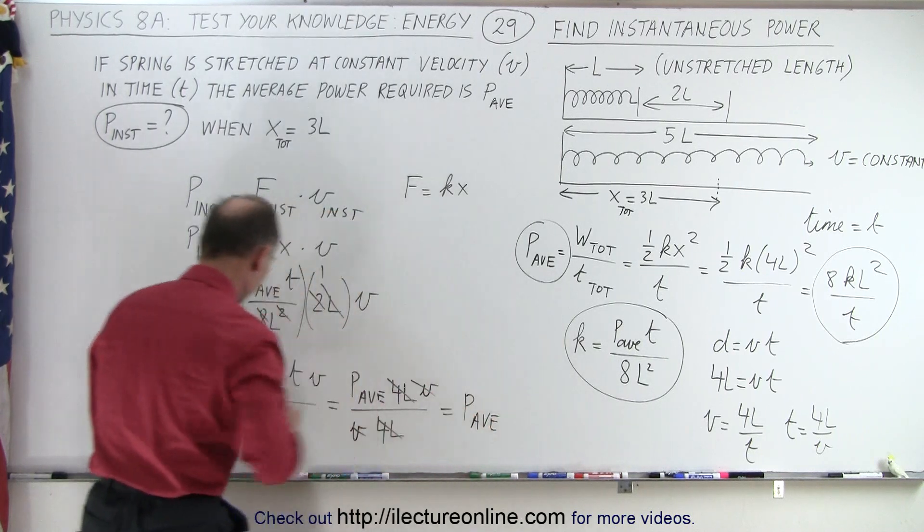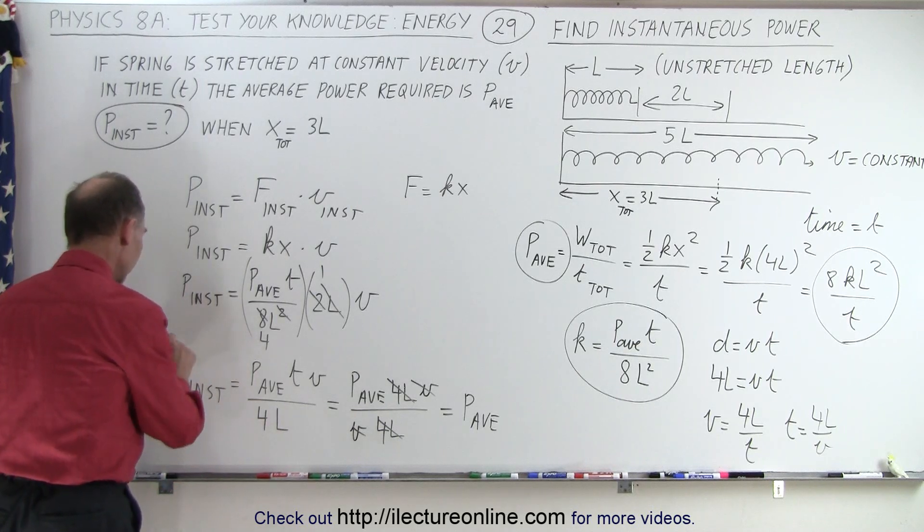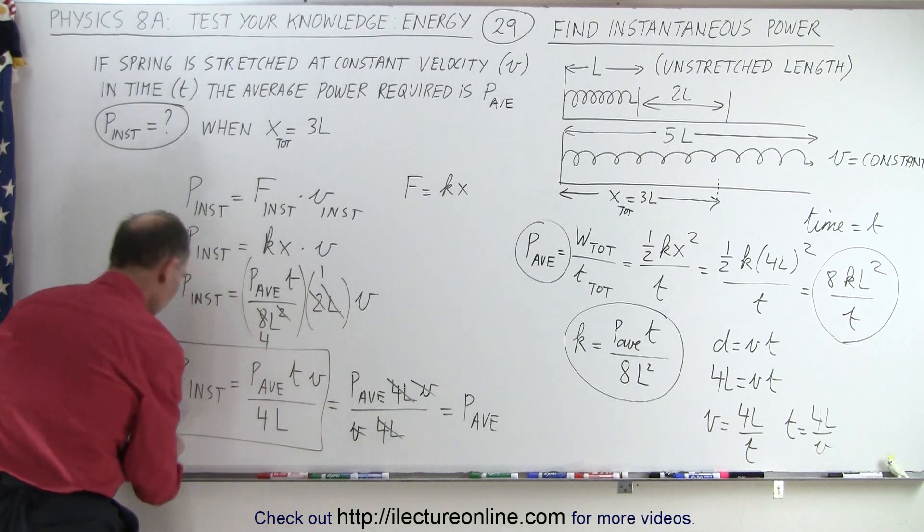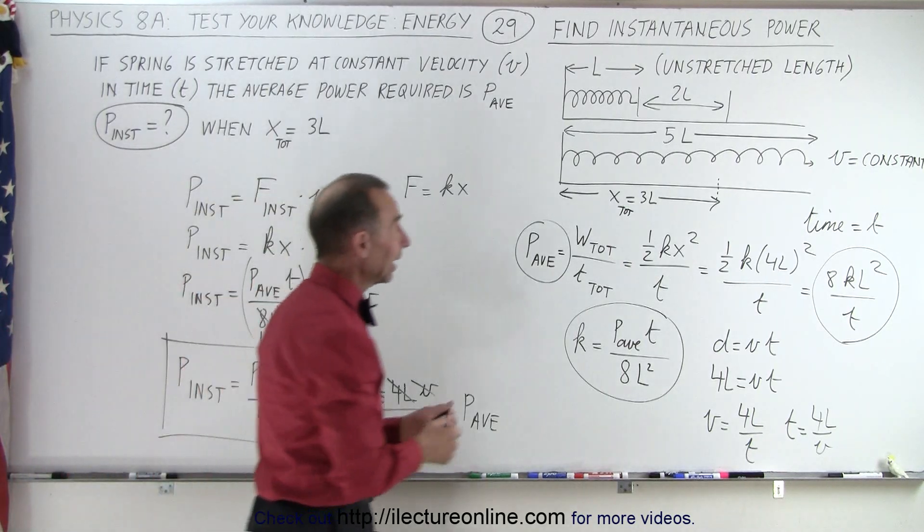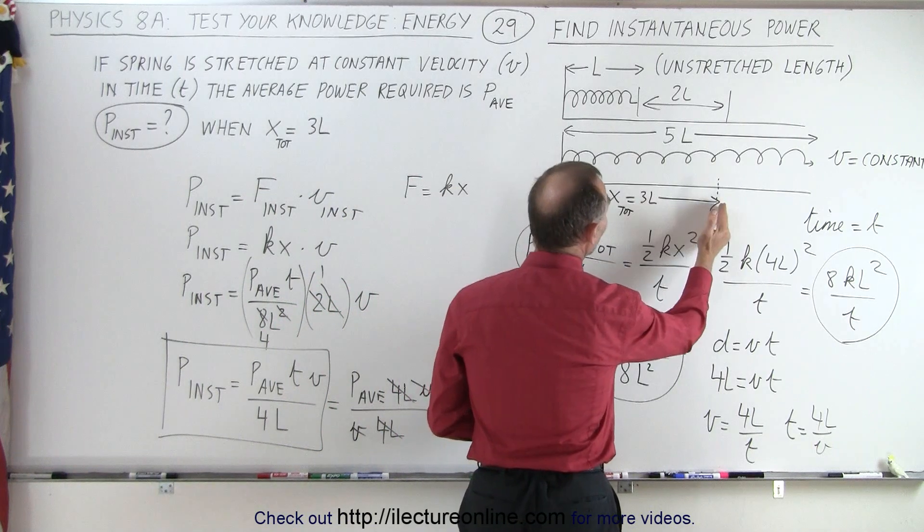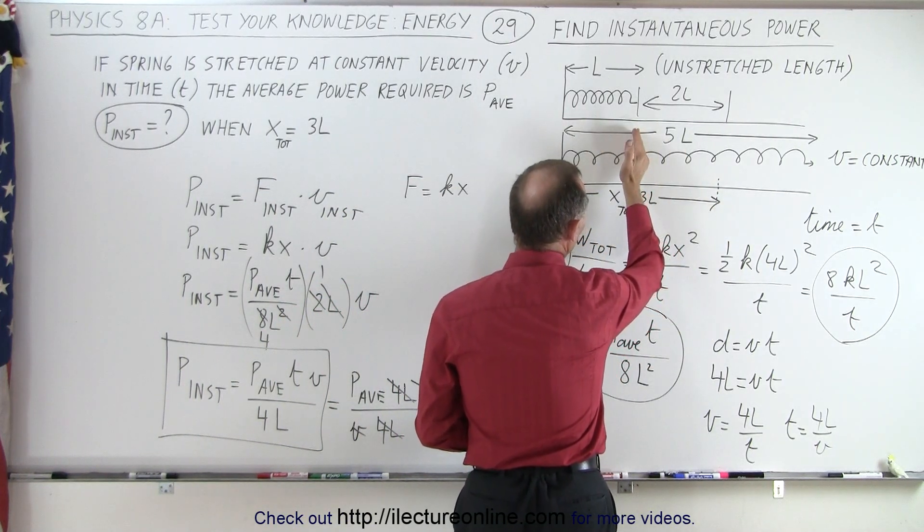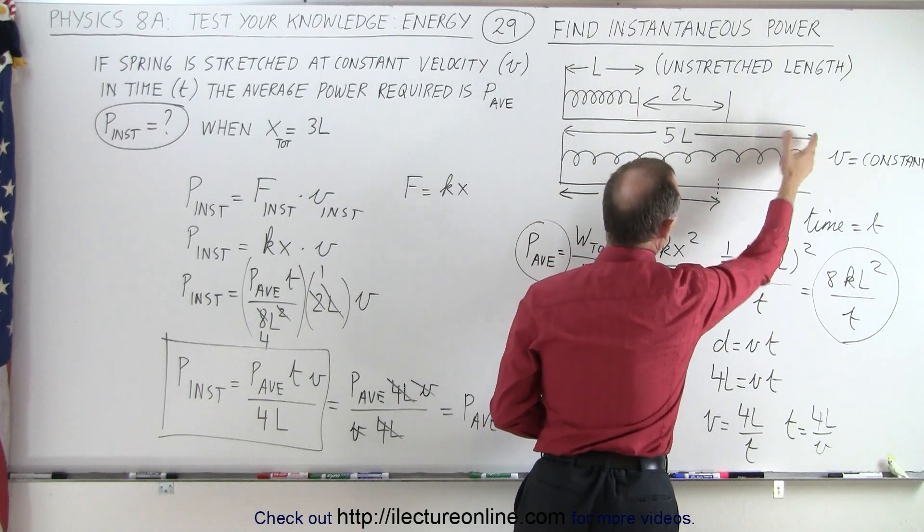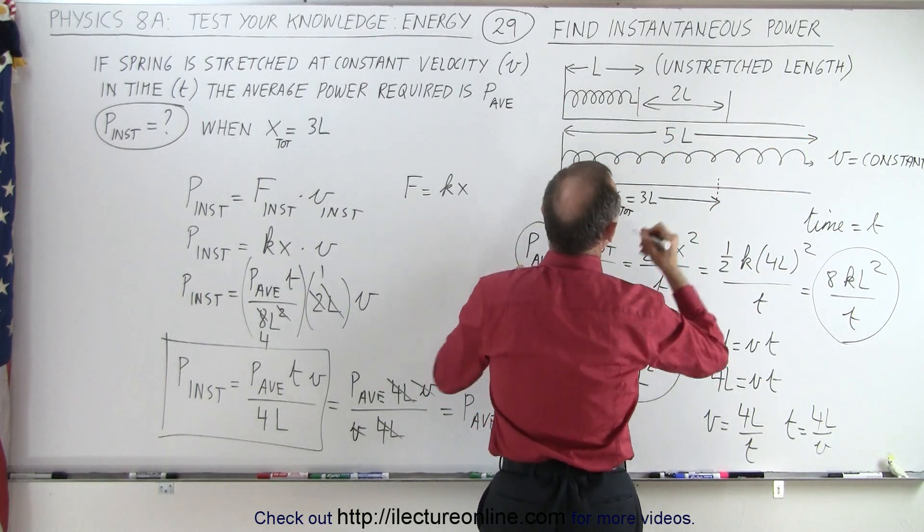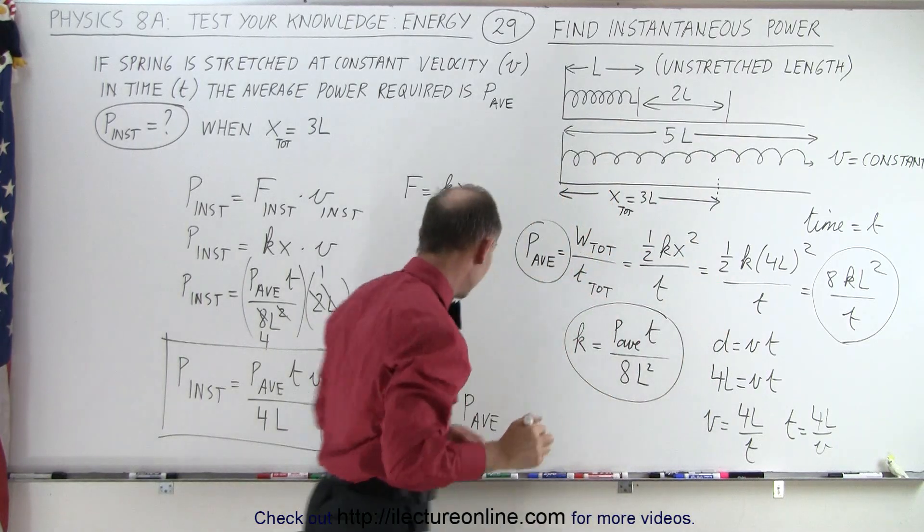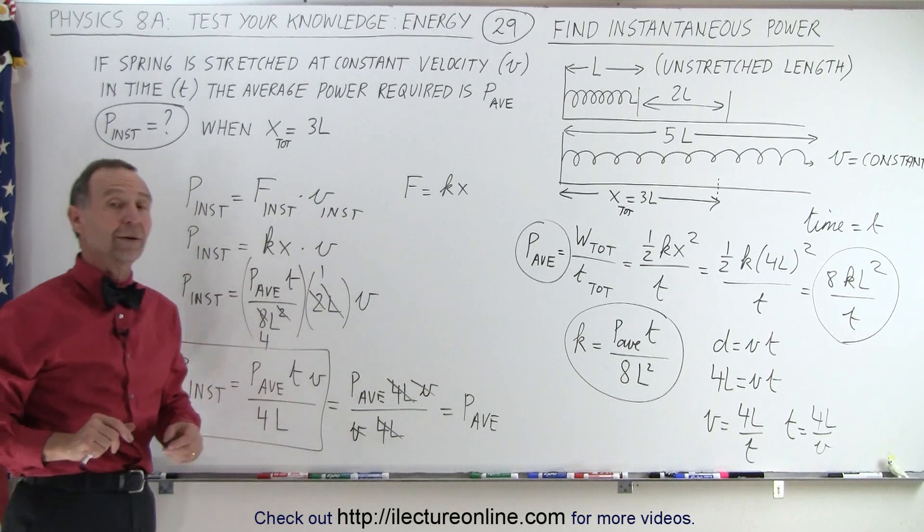Which means that the instantaneous power is equal to this, but also it's equal to the average power because it turns out that we're calculating the instantaneous power at the halfway point from where the stretched length is 0 to where the stretched length is 4L, and so at the in-between point when the stretched length is 2L, that means that the instantaneous power also happens to be equal to the average power.